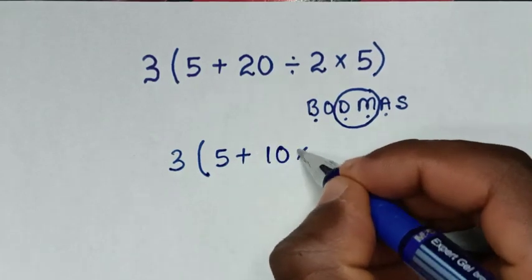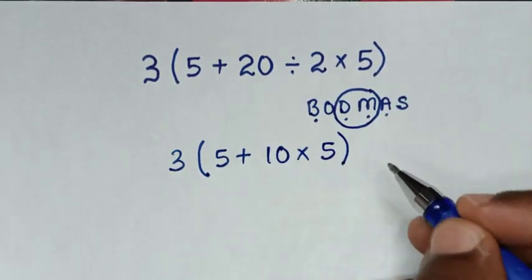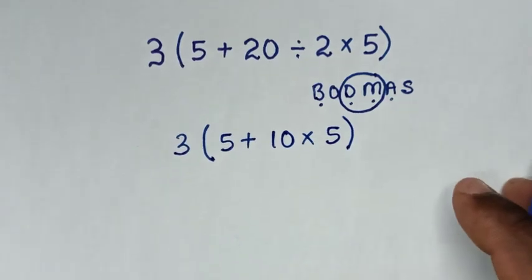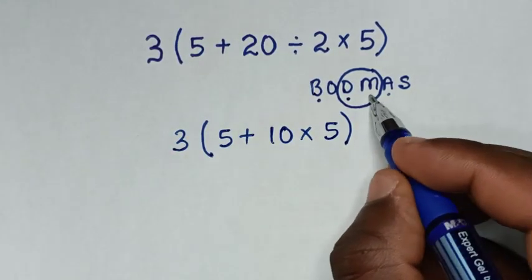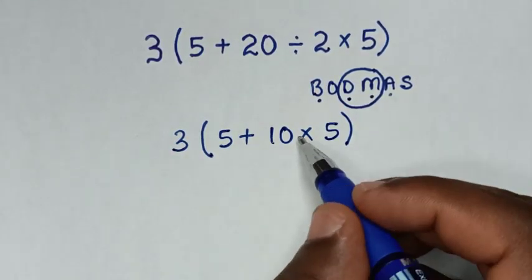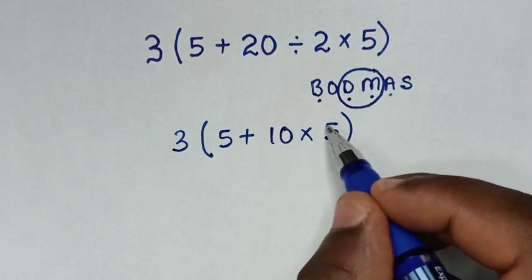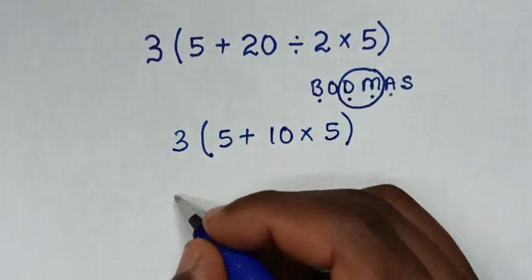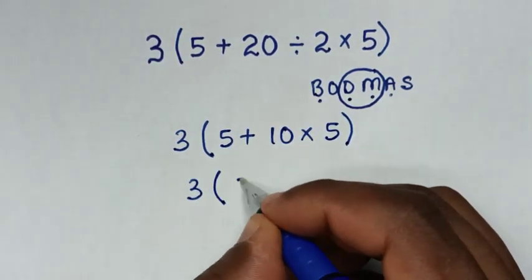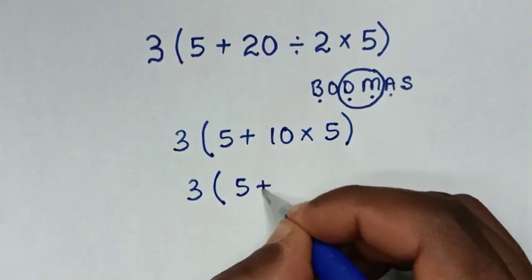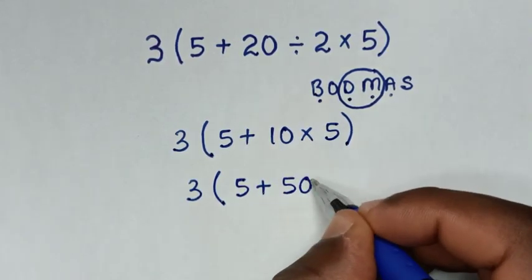After division, we do the multiplication. 10 times 5 equals 50. So the expression becomes: 3 bracket 5 plus 50 bracket.